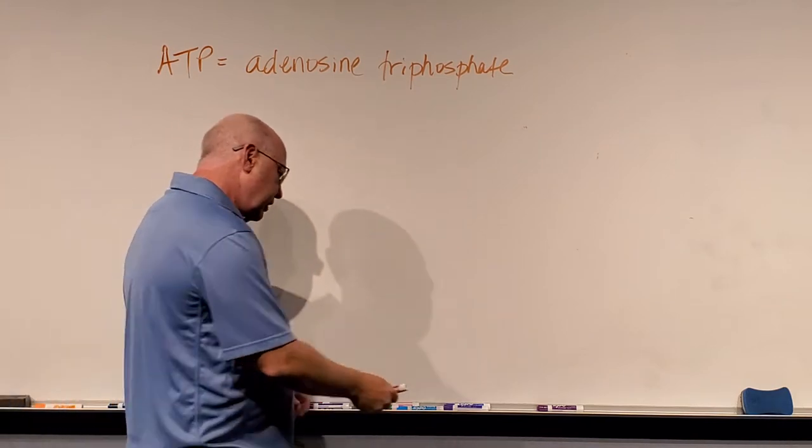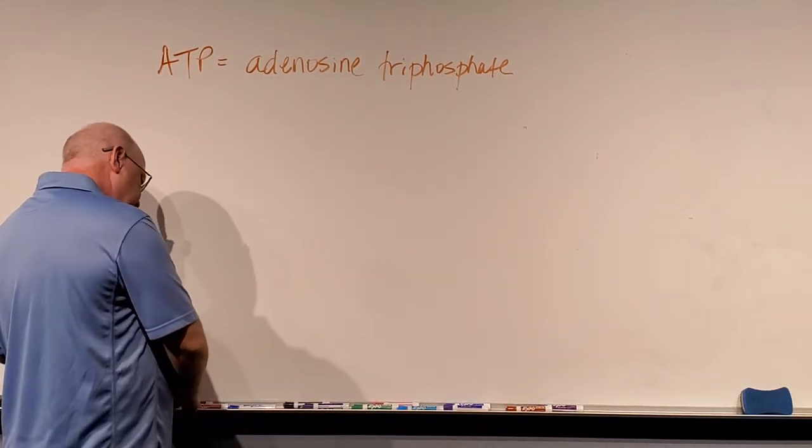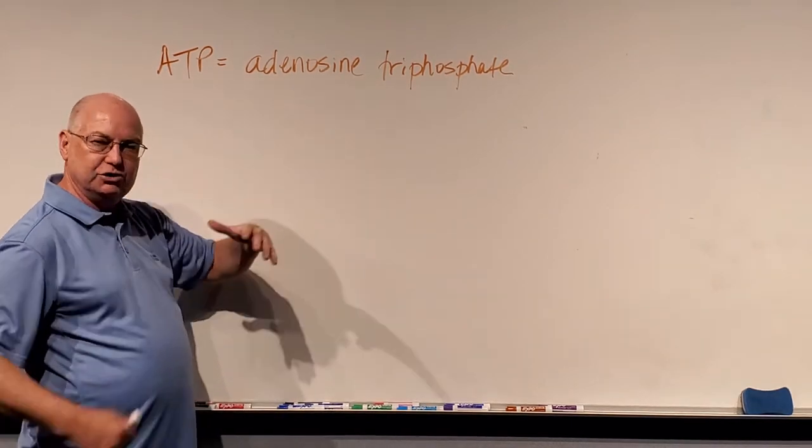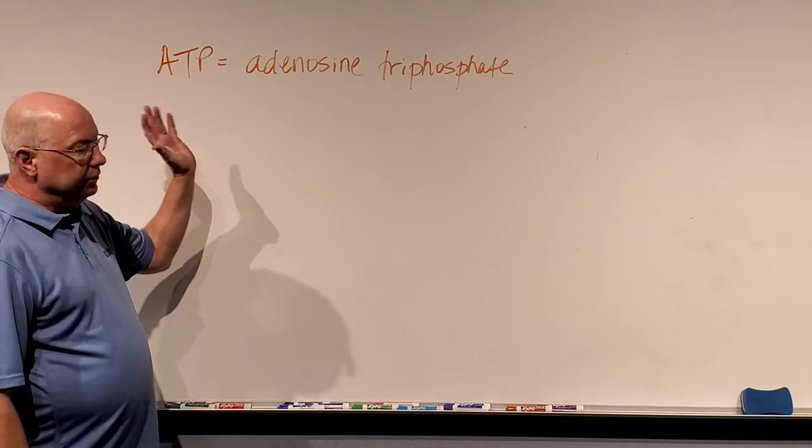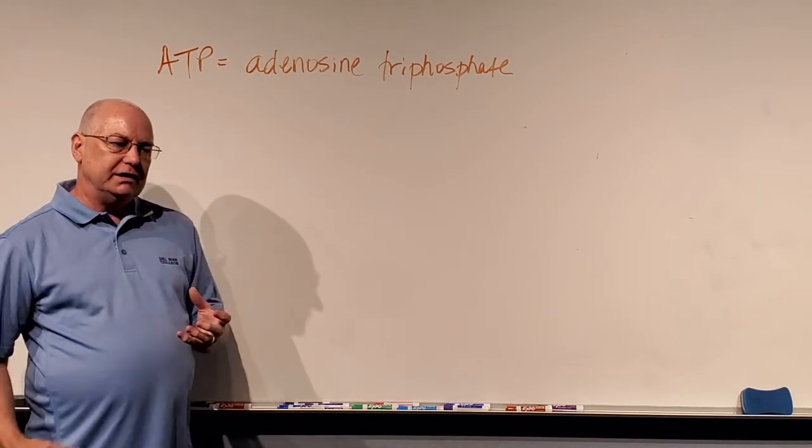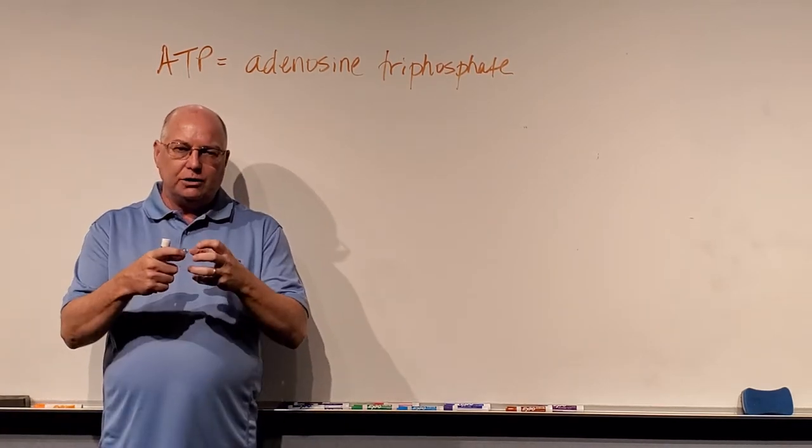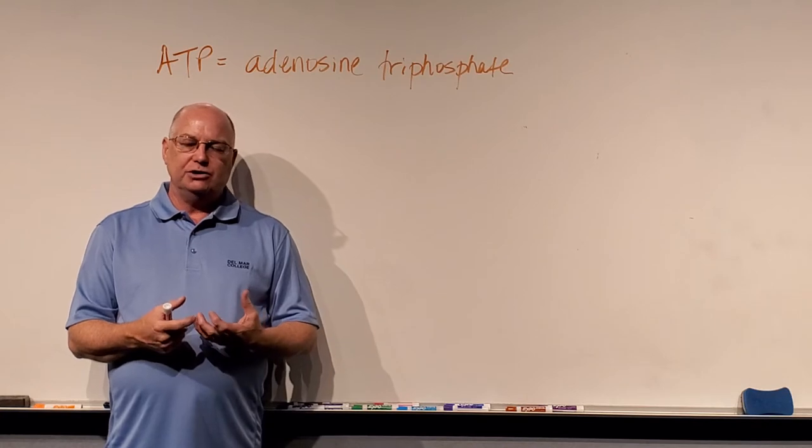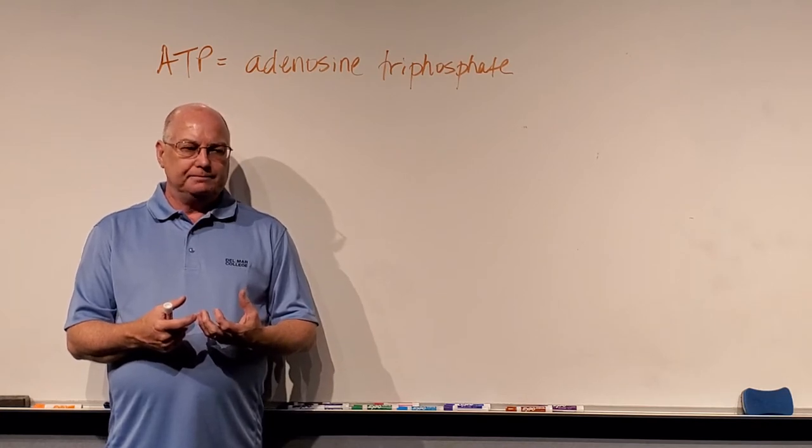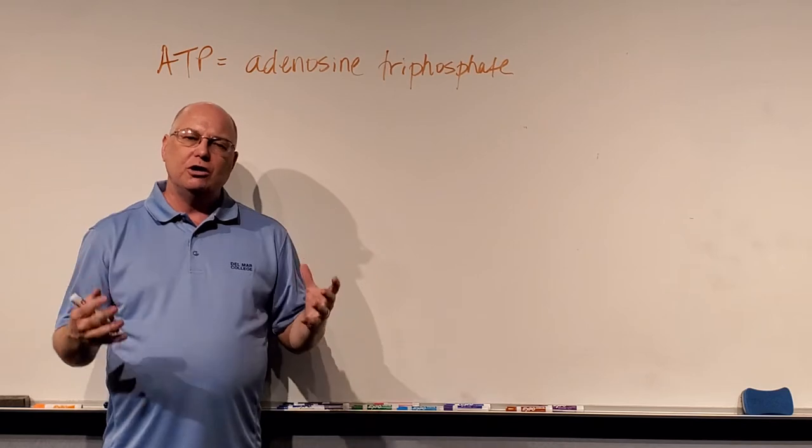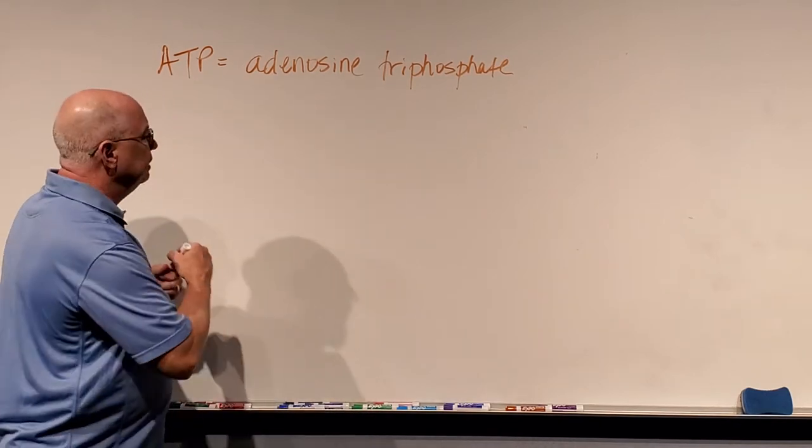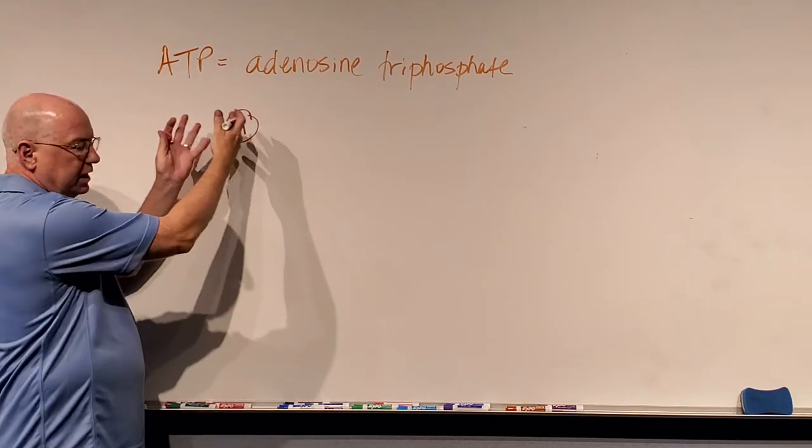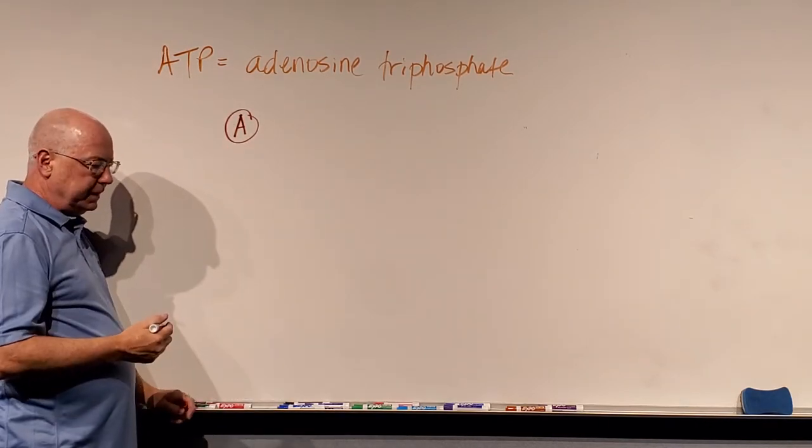Now, without getting into the complex organic chemistry, when I was a graduate student or an undergraduate in higher level courses, we had to be able to memorize the structure of adenosine and what it all means. Suffice it to say that adenosine is this ringed molecule, some rings of carbon, nitrogen, hydrogen, and oxygen that can have phosphate attached to it. I'm not going to draw out the complex structure of adenosine. It's a ring-shaped molecule, a bunch of carbons, hydrogens, oxygens, and some nitrogen all together.